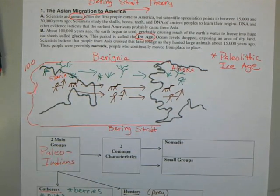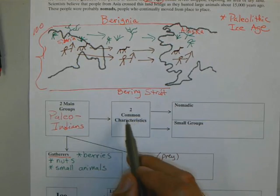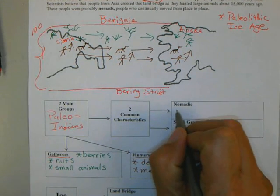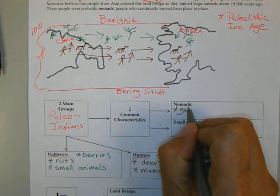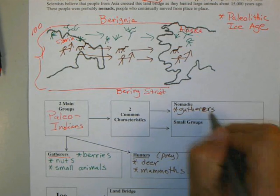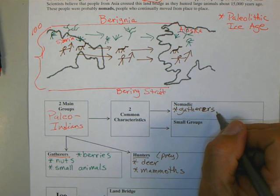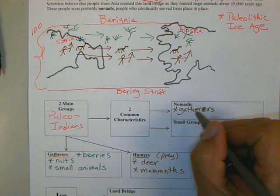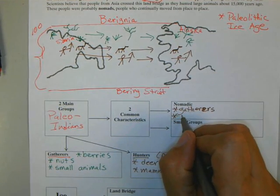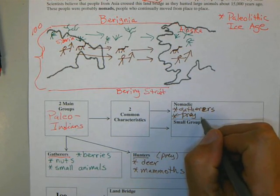Two common characteristics of these two groups — gatherers and hunters. Number one is they're nomadic. The gatherers are going to follow vegetation, nuts, and berries, and as those plant life die seasonally, they're very nomadic. The other group — the hunters — are going to be following the migrating animals.